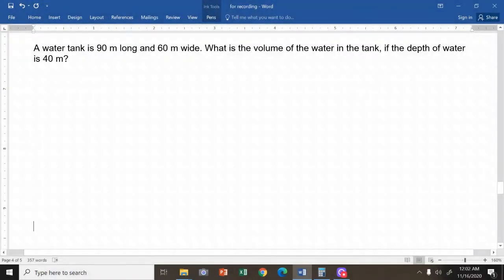A water tank is 90 meters long and 60 meters wide. What is the volume of water in the tank if the depth of water is 40 meters? We have a water tank. Assume that this is a rectangular prism. This is what it looks like.